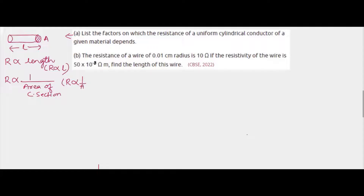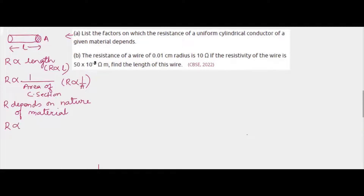Second, R varies inversely as the area of cross section — that is, R varies inversely as A. If area of cross section increases, the resistance will decrease, and if the area of cross section decreases, resistance will increase. Third, R depends on the nature of material.